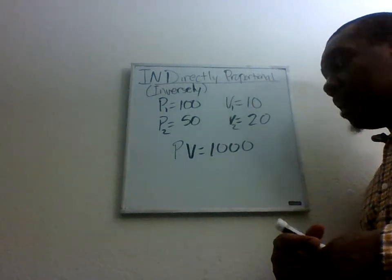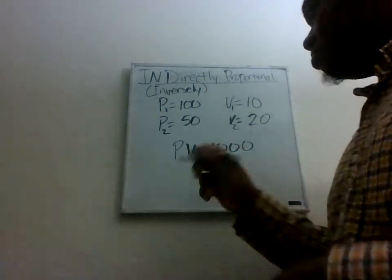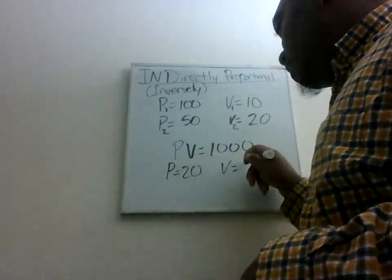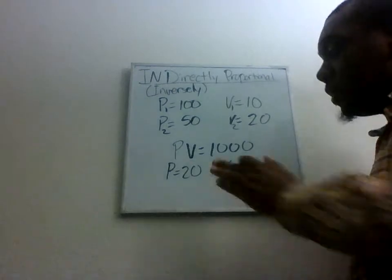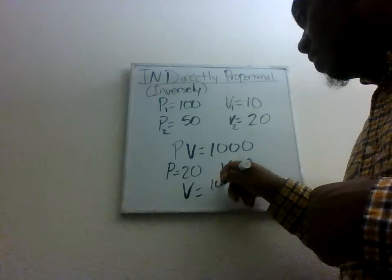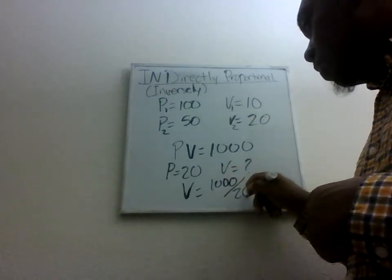So let's say I know that the pressure is equal to 20. What's the volume? Well, 20 times some number has to give me 1,000. So the volume must be 1,000 divided by 20.